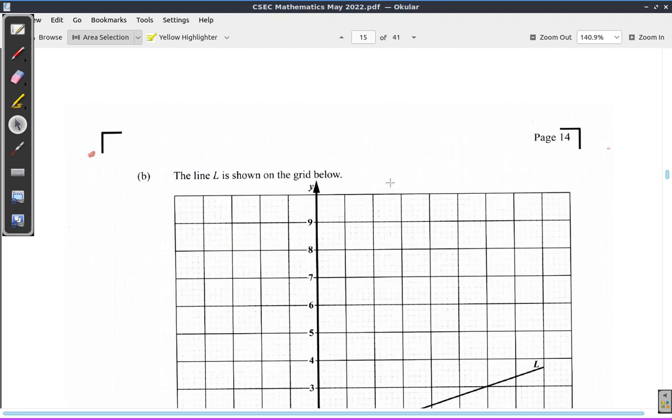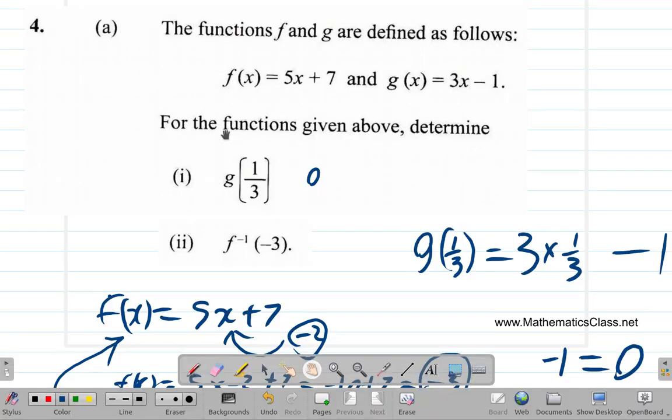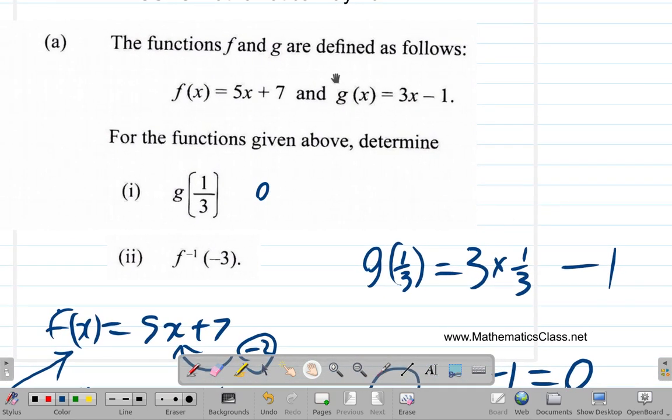CSEC Mathematics Pass Paper, May 2022. We continue looking at Question 4. We're now at 4B.